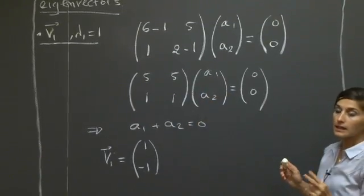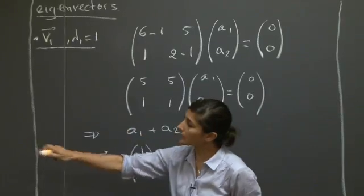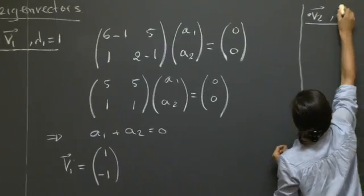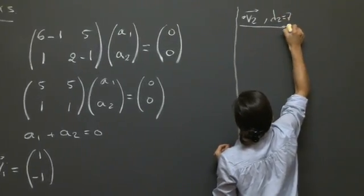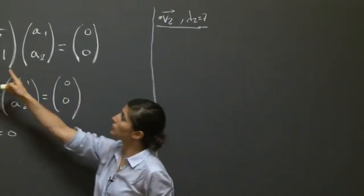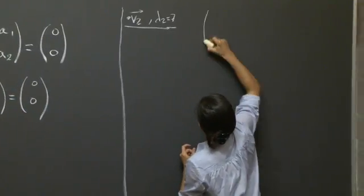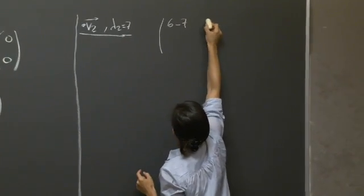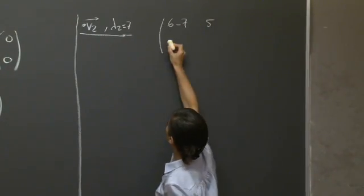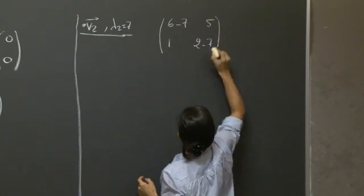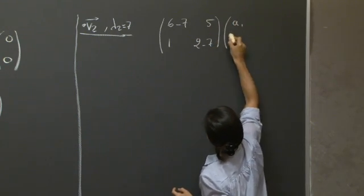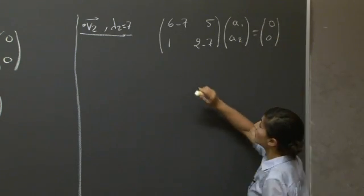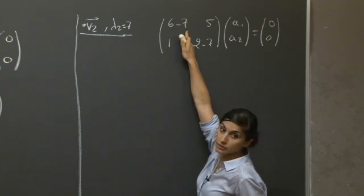So if we look now for the second eigenvector corresponding to the second eigenvalue 7, I would be looking for the components of this vector by doing a similar, solving for the same thing. And I'm going to spell it out again so that you see where the terms are coming from. So here we have 6 minus 7, which is minus 1, 5.